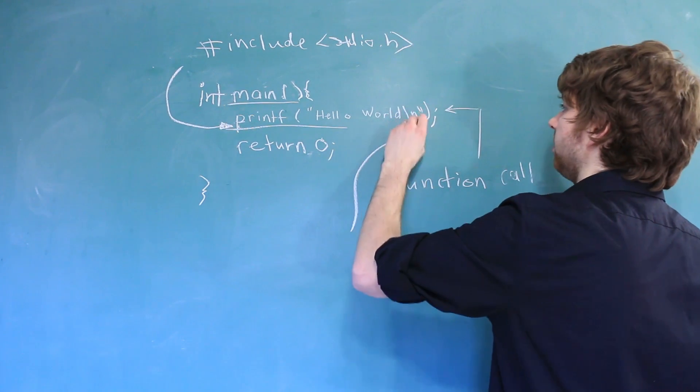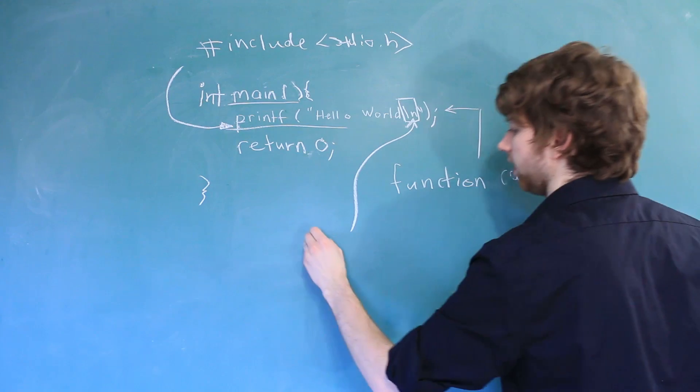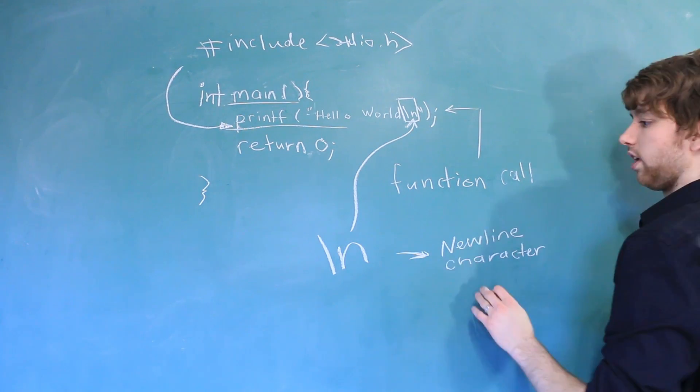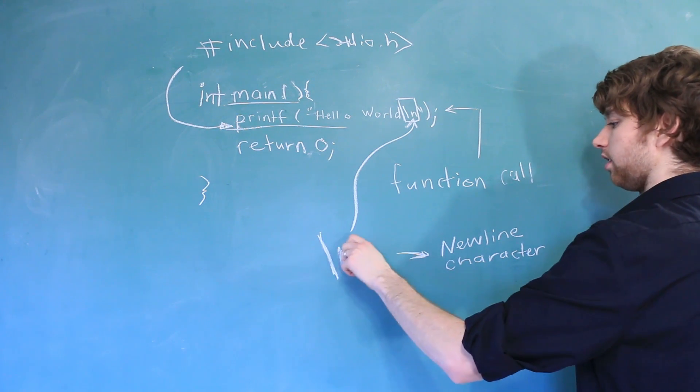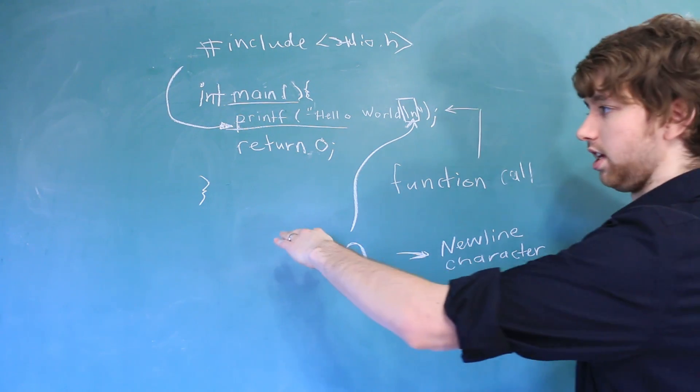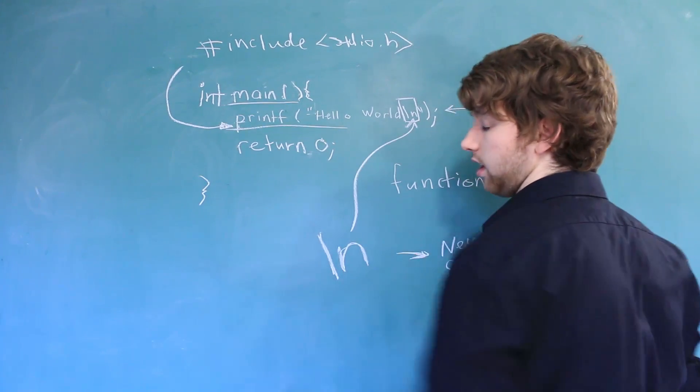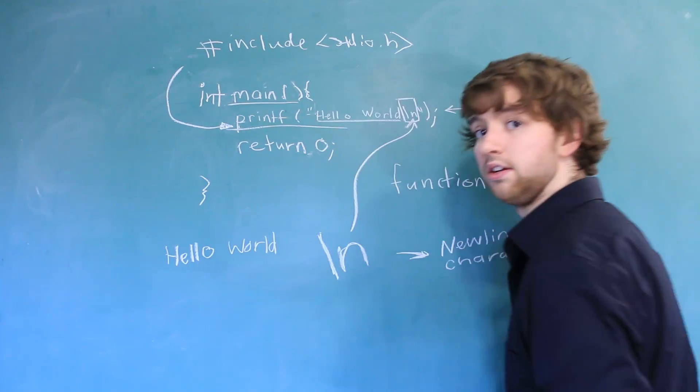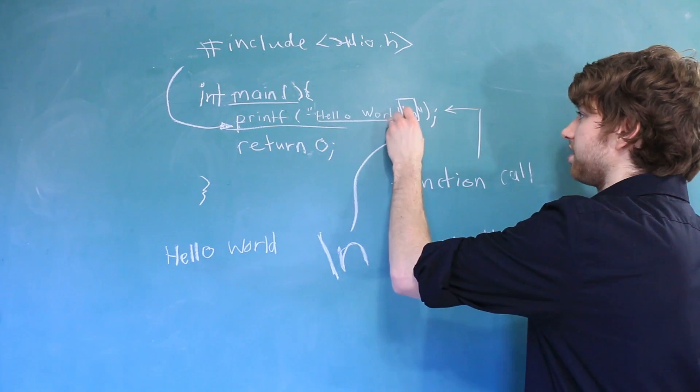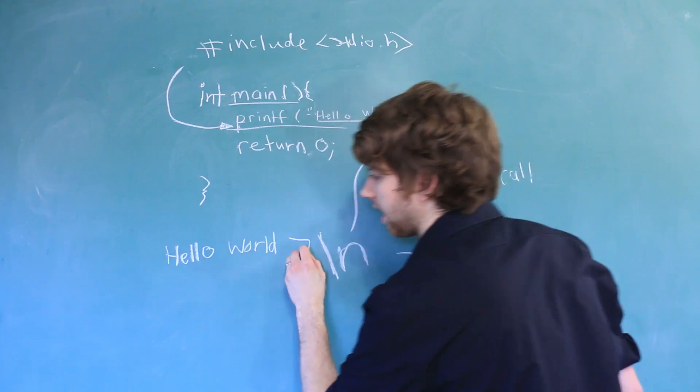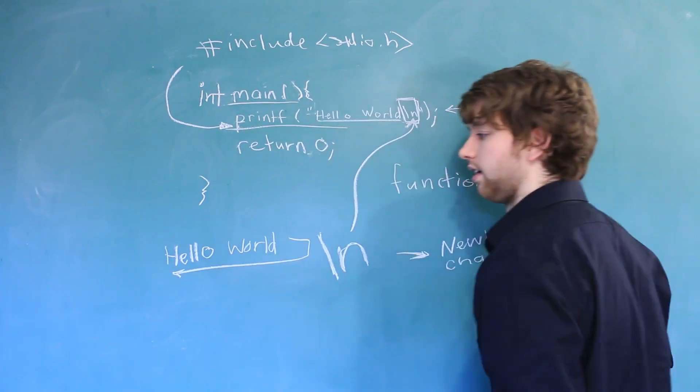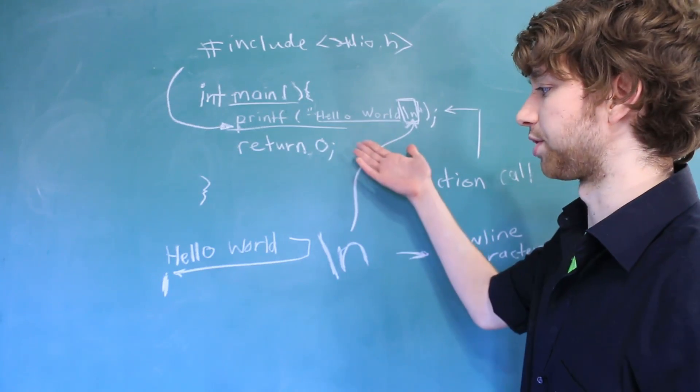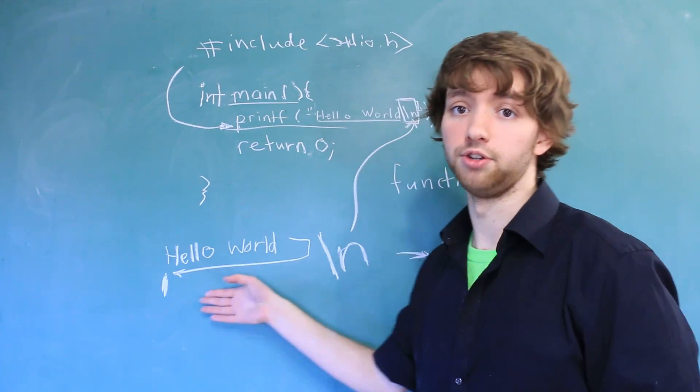Last thing I have to say is this little backslash n, this little weird thing right here. This is called the new line character. Whenever we use this backslash n, we are saying we want the console to go down to the next line. So what this is going to do is it's going to print exactly what we have. And then when the console tries to print this backslash n, what happens is it goes down to the next line. And then this is where the cursor is now. And then that's the end of our program because we return zero. So the program is going to end on a new line.